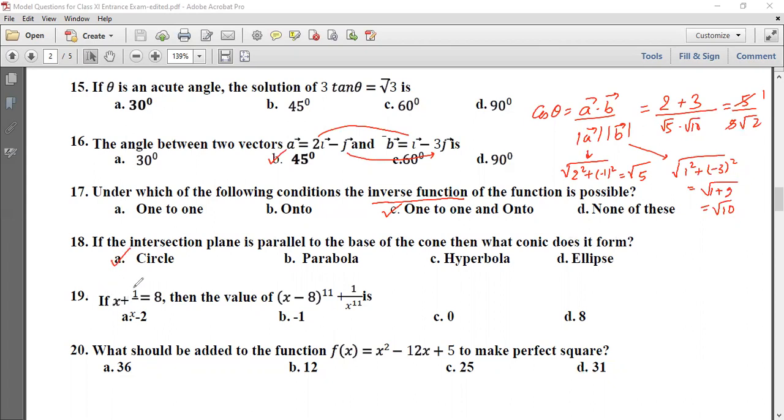Problem 19: x plus 1 upon x equals to 8. Then the value of x minus 8 to the power 11 plus 1 upon x to the power 11 is. This is the value of x to the power 11 plus 1 upon x to the power 11. So you have to go 0 and option c is the correct answer.